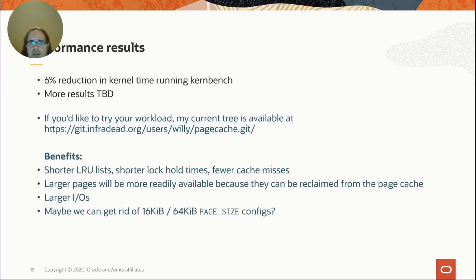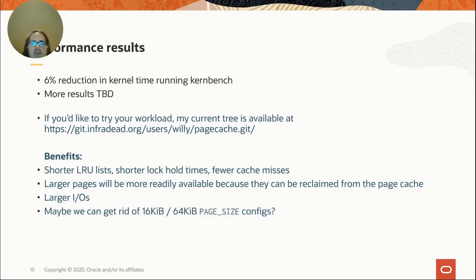Was it worth it? KernBench is a benchmark that compiles the kernel, which is obviously the most important workload. One of my colleagues ran the benchmark and saw a 6% reduction in kernel time — from about 210 seconds to 204 seconds. You have to remember that most of that time is spent in user space running GCC, so the kernel time portion went down substantially by 6%. That's pretty good for a benchmark we optimize so heavily for.